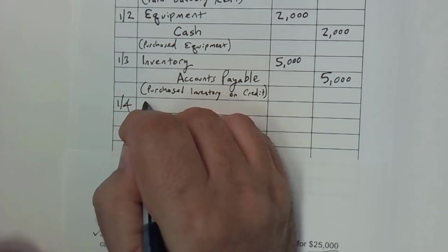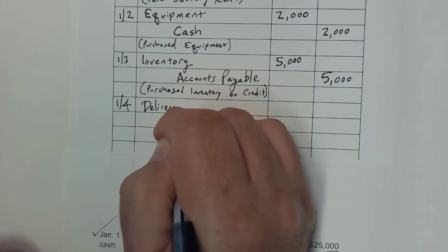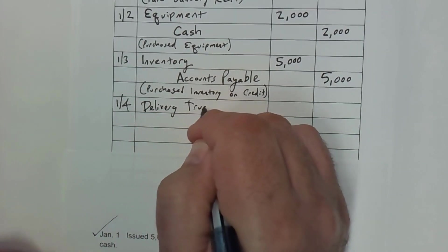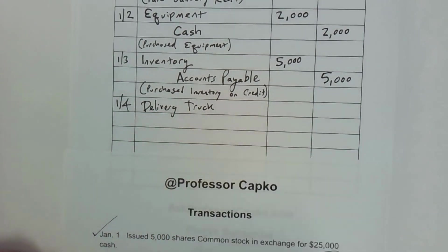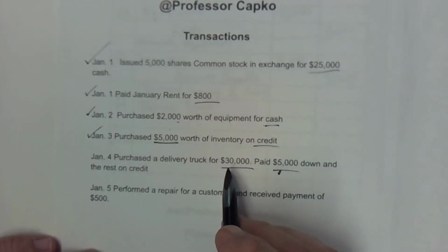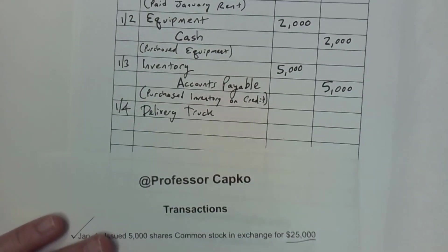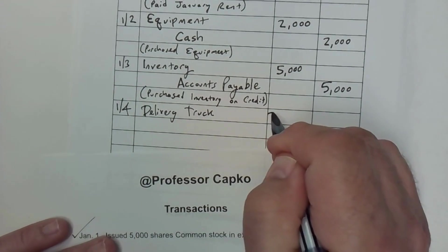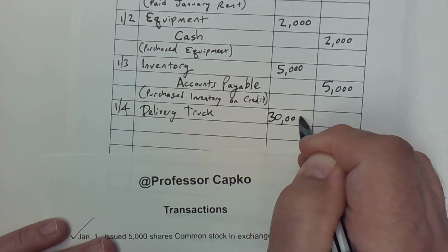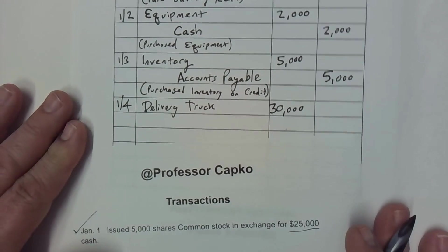And we're going to put delivery truck on the books and put it for the full value of the truck — the purchase price, which is $30,000. So delivery truck, I debit $30,000.